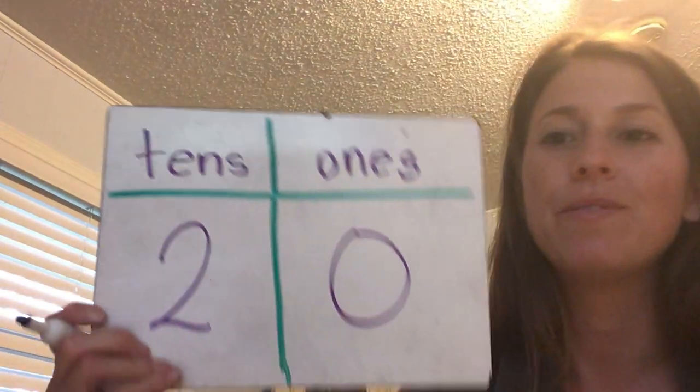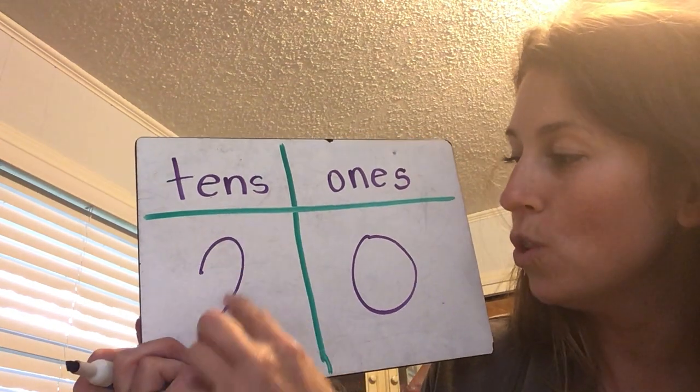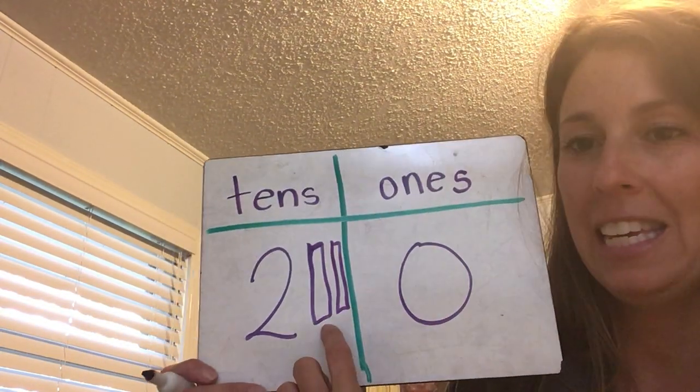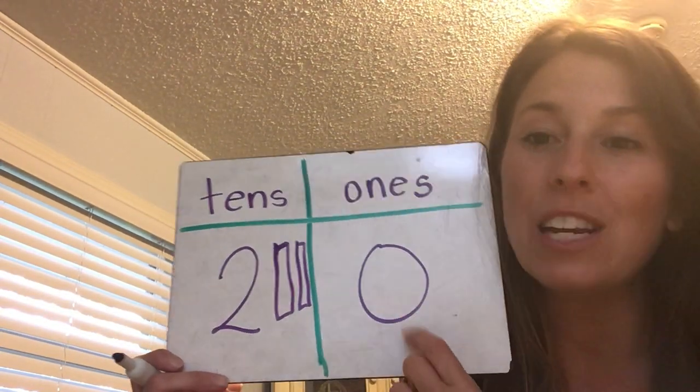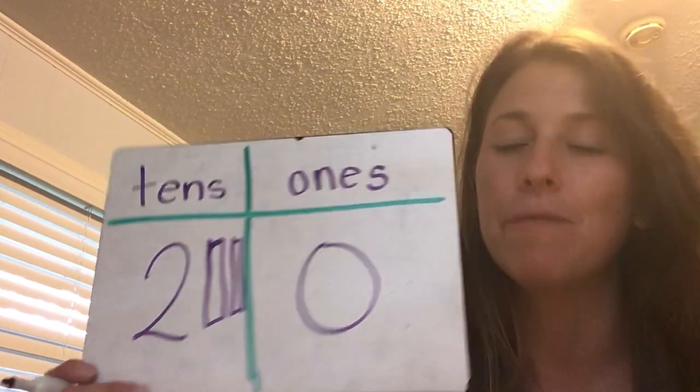My next number has two tens and zero ones. What is my number? Two tens and zero ones — twenty. Twenty has two groups of ten. If I drew them: ten, ten — twenty — and zero ones. This number is twenty.